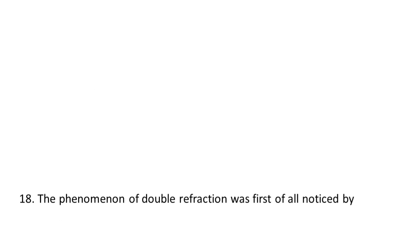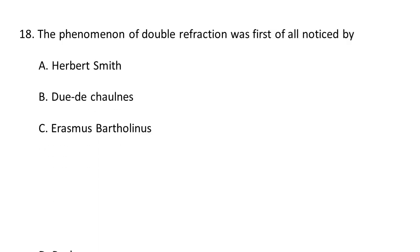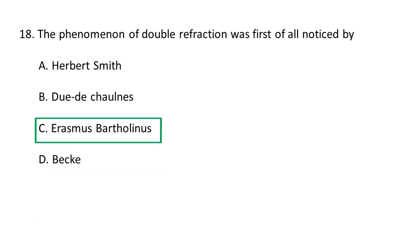Next question: The phenomenon of double refraction was first noticed by — A. Herbert Smith, B. Duda Challenz, C. Erasmus Bartholinus, D. Becke. The phenomenon of double refraction was first noticed by Erasmus Bartholinus. The light passing through a calcite crystal is split into two rays; this process was first reported by Erasmus Bartholinus in 1669 and is called double refraction. C is the correct option.